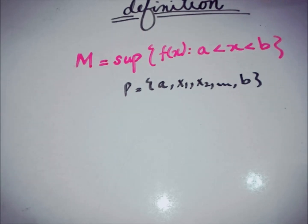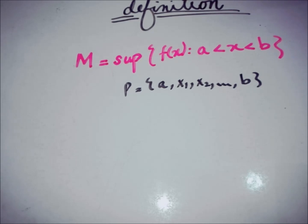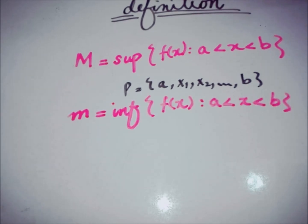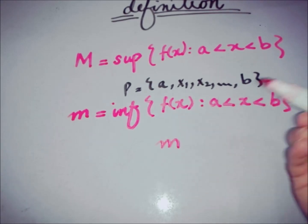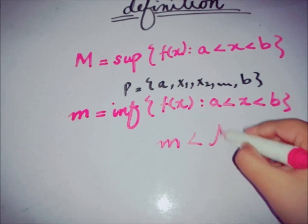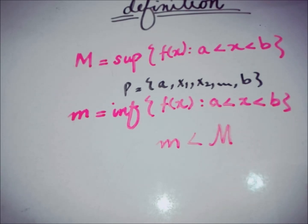In the same way, we know what is meant by the infimum of a function within this partition P, represented by small m. And there is an obvious relation between the supremum and infimum of the function — that small m, the infimum, is always less than the supremum capital M of the function.